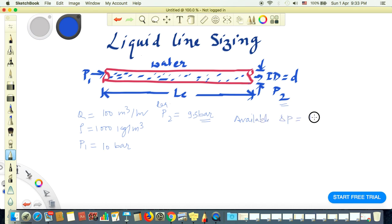That means the available delta P is 10 minus 9.5 bar, which is 0.5 bar. We are allowed to drop only 0.5 bar pressure drop due to friction in the pipeline. We have to select the pipe line size so that the pressure drop would not go beyond 0.5 bar in the entire length of the pipeline.